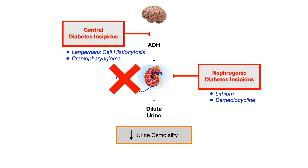To summarize and really hammer this home: central DI — the brain can't make ADH. Nephrogenic DI — the kidney can't respond to ADH. In both scenarios, the body cannot reabsorb water. Water stays in the urine. Urine becomes dilute. Urine osmolality drops. And that's DI.